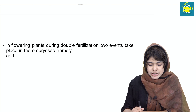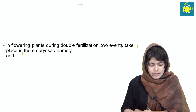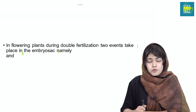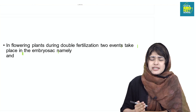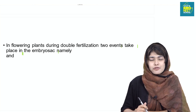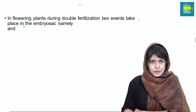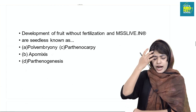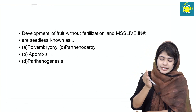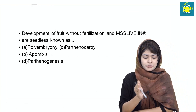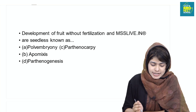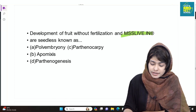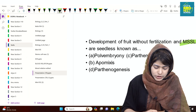Next question about flowering plants: during double fertilization, the events that take place in the embryo sac include single fusion and triple fusion. The development of fruit without fertilization leads to seedless fruits — that is called parthenocarpy.